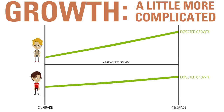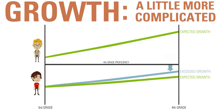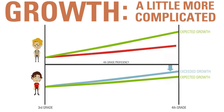If a student makes more progress over that year than was expected, that student exceeded growth, even if they're not at grade level. If another student makes less progress than was expected, they didn't meet growth, even if that student is a high achiever.